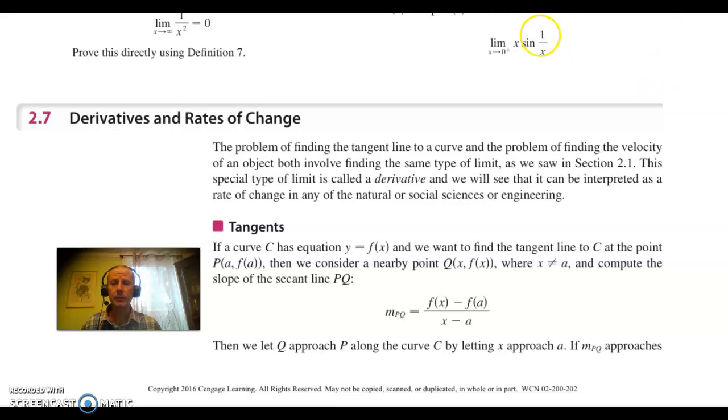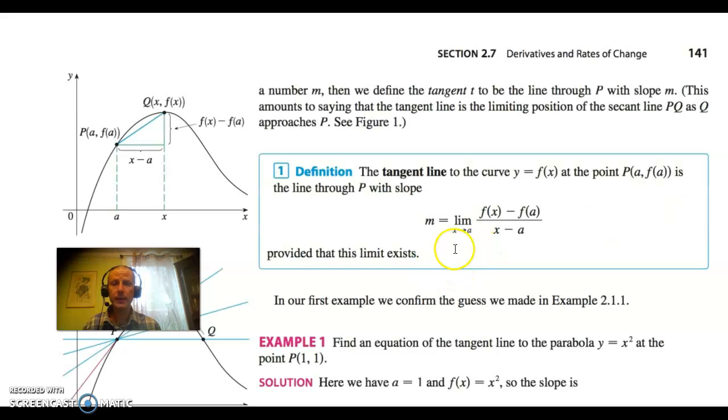In fact, if you start reading section 2.7, the first thing they tell you is that if one point on the curve is (a, f(a)) and the other point on the curve is (x, f(x)), then the slope of the secant line between those two points is f(x) minus f(a) over x minus a. And then they define the slope of the tangent line to be the limit as x goes to a of f(x) minus f(a) all over x minus a.